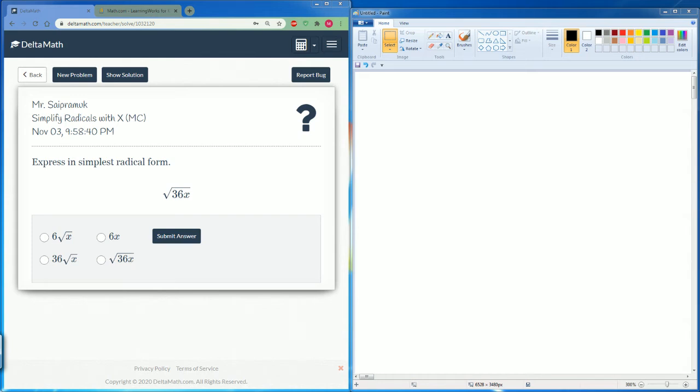Welcome, this is the Delta Math tutorial covering simplifying radicals with x's in there. These are multiple choice problems. Expressed in simplest radical form, we have the square root of 36x.